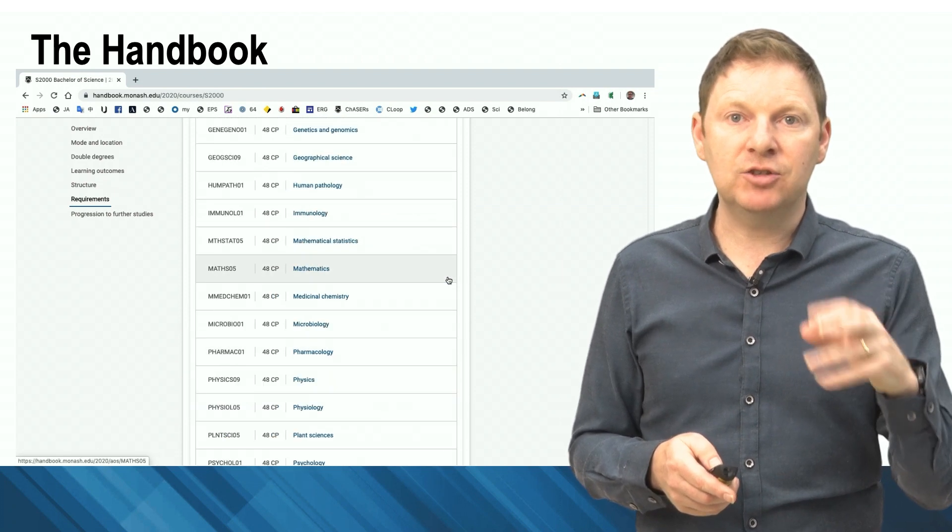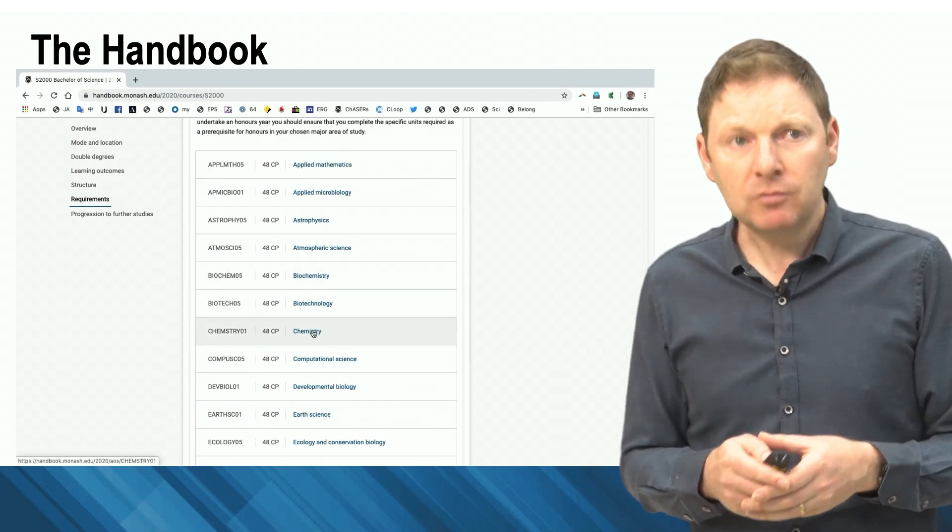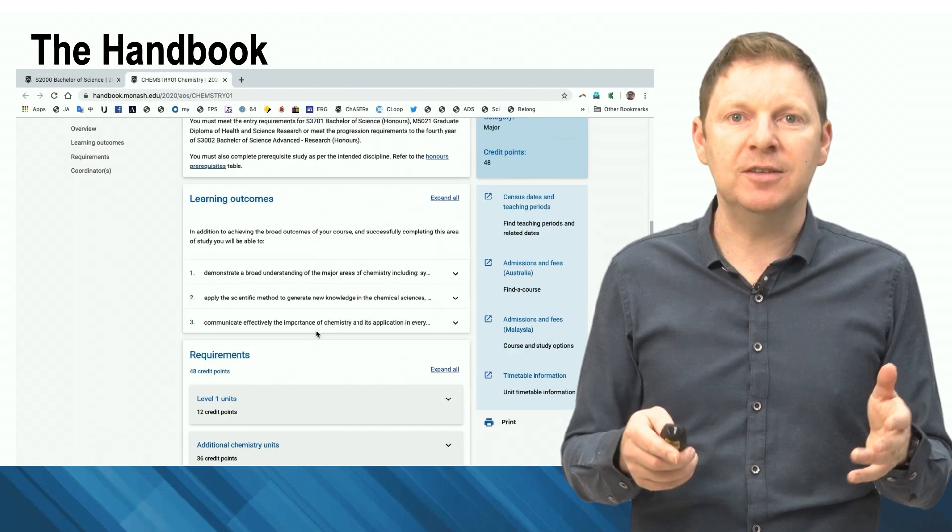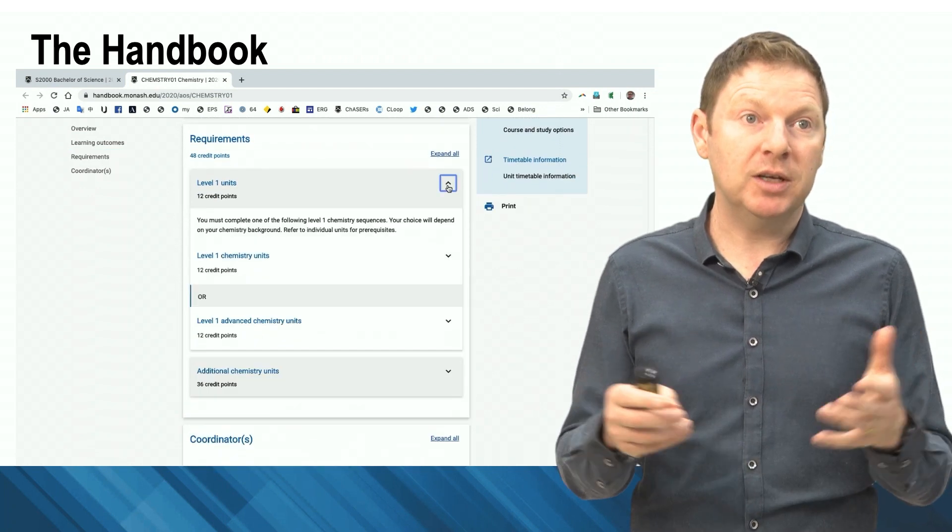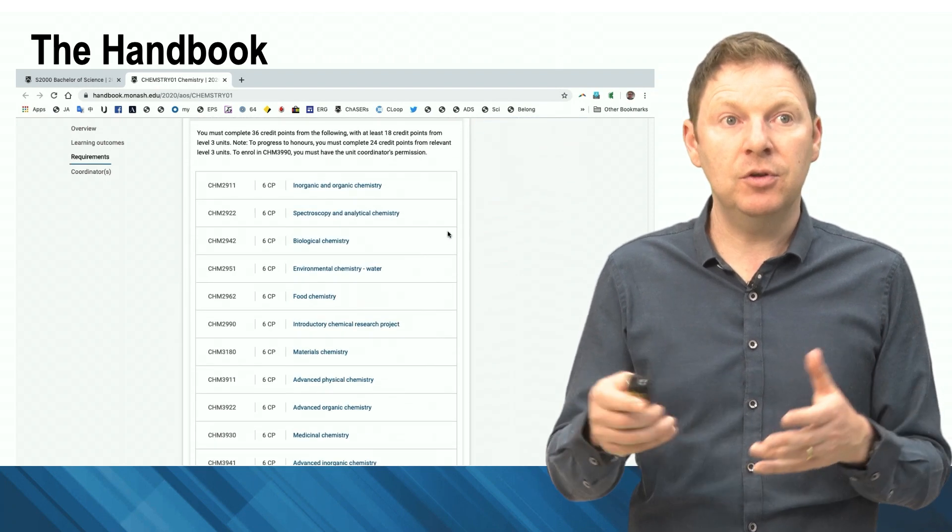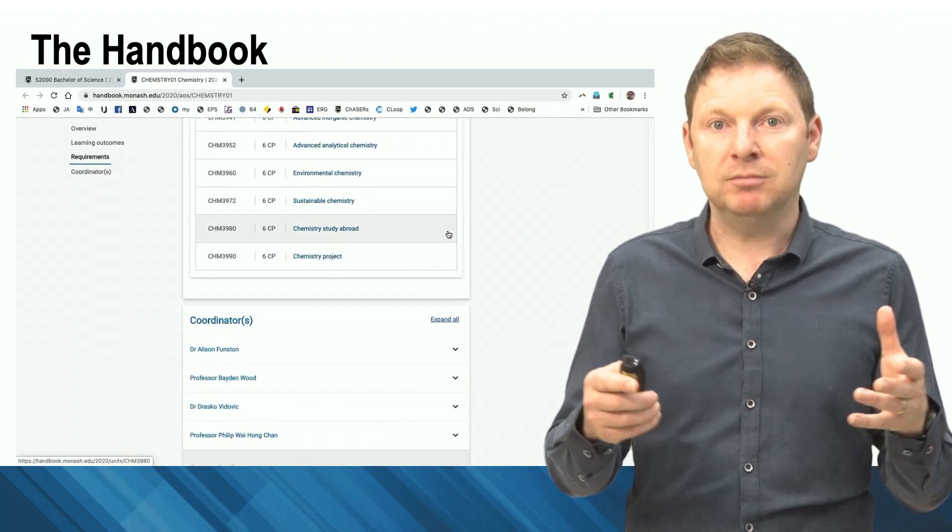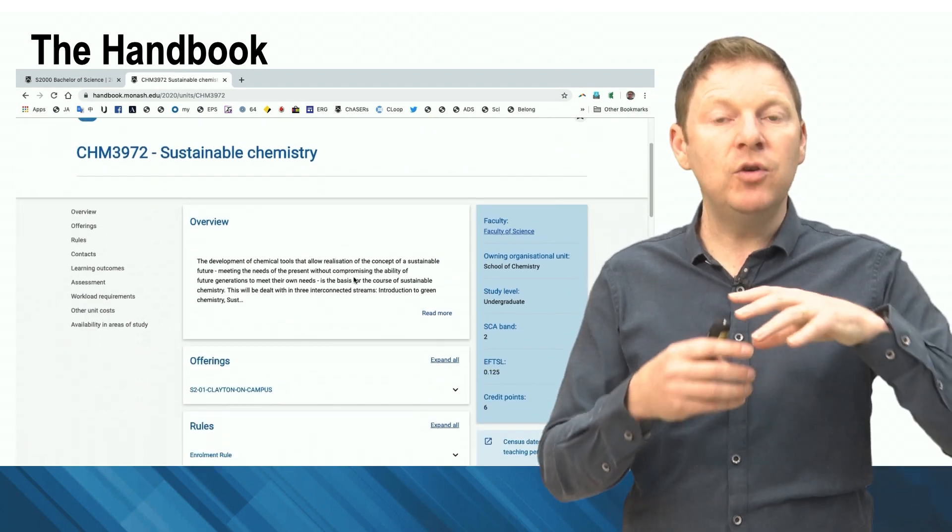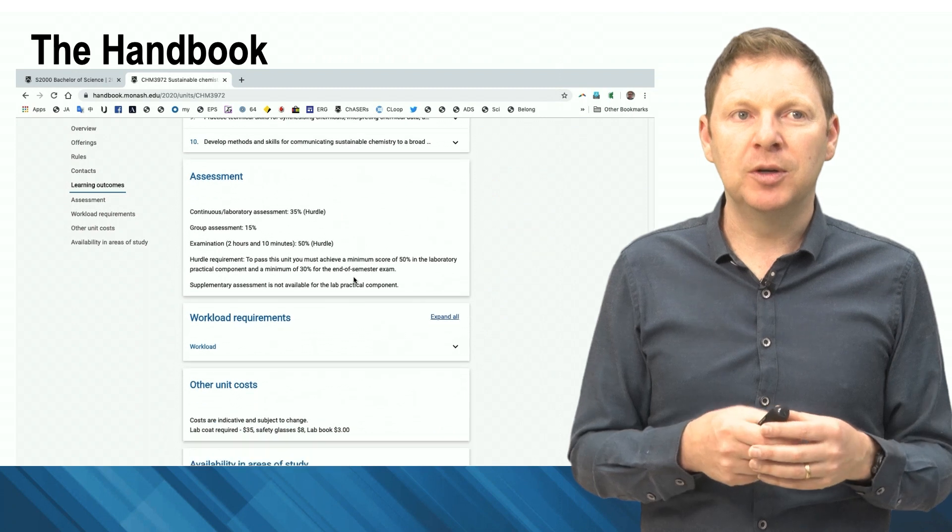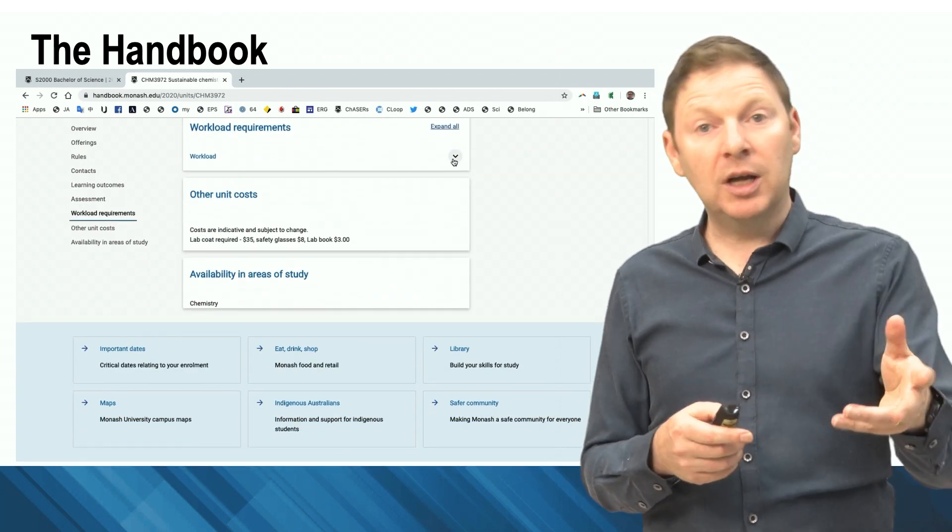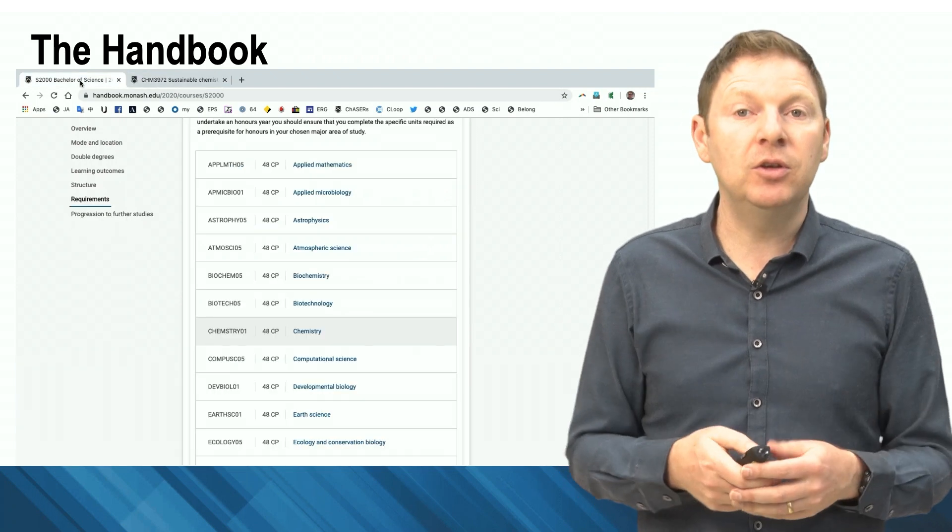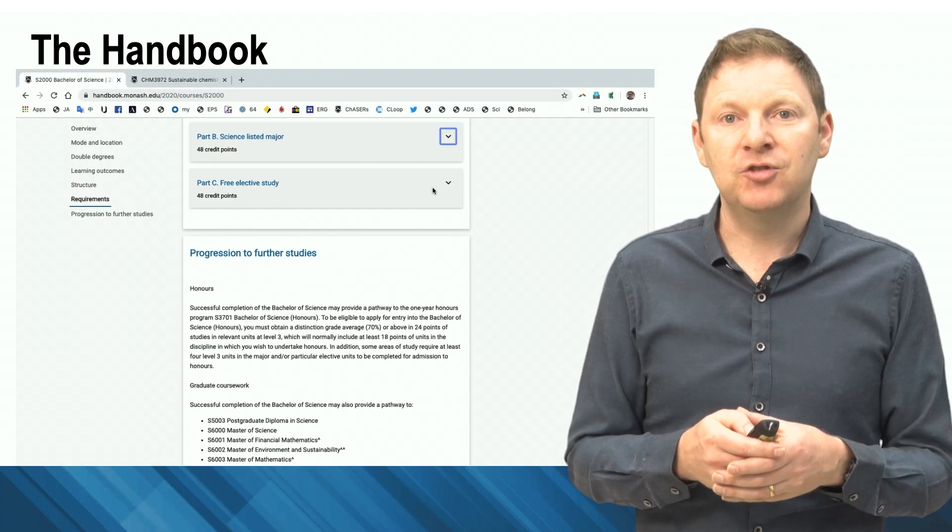So let's pick one of these. Let's go to chemistry, for example. You can see here it's got all of the important details that you need for the course. What are the level one subjects? What are the options for level two and level three, or what we call second and third year subjects? Let's pick one - sustainable chemistry. Click on this. This will give you all of the information you need to know about doing the sustainable chemistry unit. What are the workload requirements? How many lectures do you have a week? Are there any costs associated with doing the unit, like buying a lab coat, and so on.